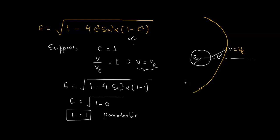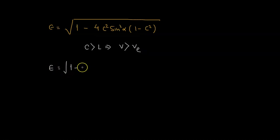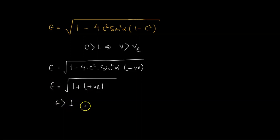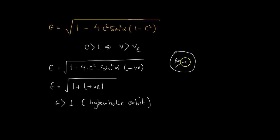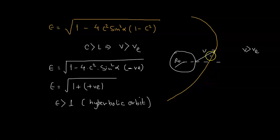When C > 1 — meaning the velocity is greater than the escape velocity — then (1 − C²) is negative, making ε = √(1 + 4C²sin²α(C² − 1)). Since C > 1, the term inside is always greater than 1, so ε > 1. This corresponds to a hyperbolic orbit. So if V > V_e, the object follows a hyperbolic trajectory.